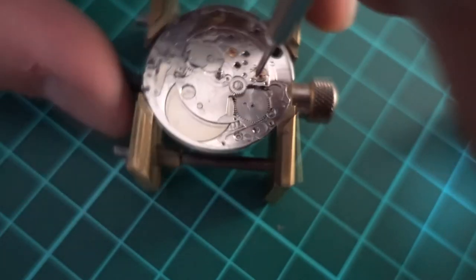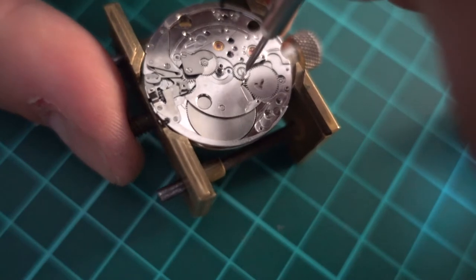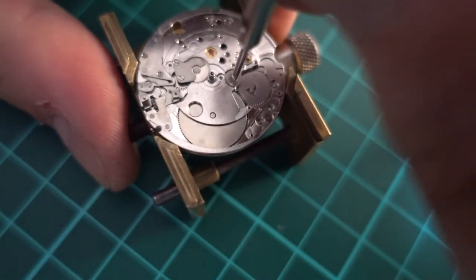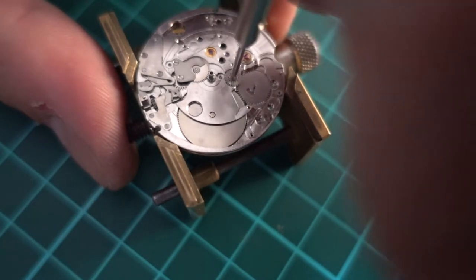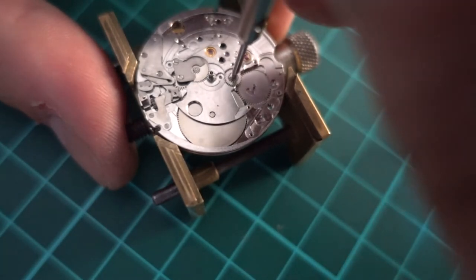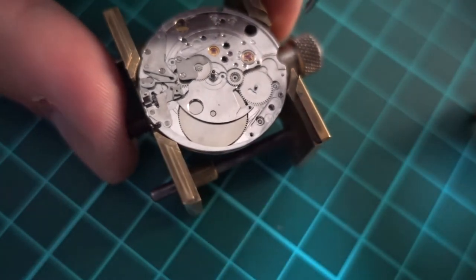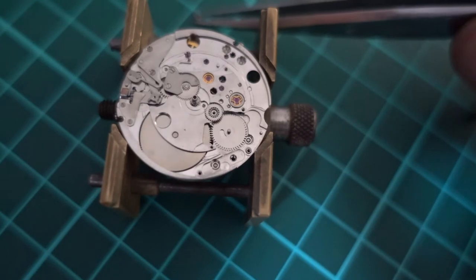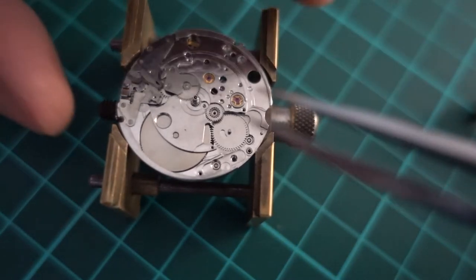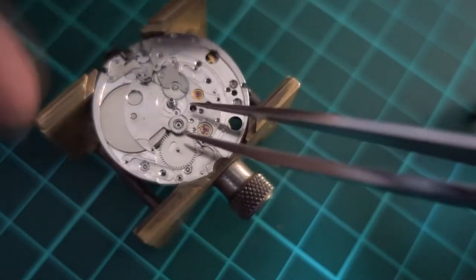Now I'm just removing the intermediate wheel. I could not get a good grip on this, so you'll probably see me faffing around with it. And there we go, that's that intermediate wheel coming out.